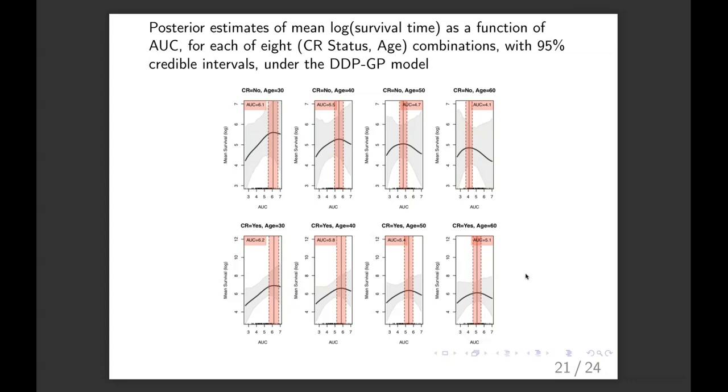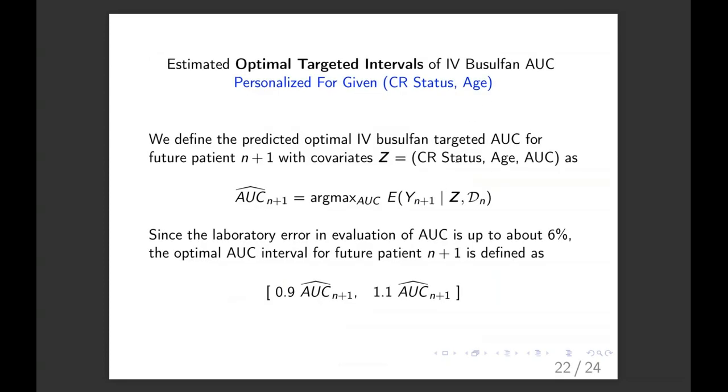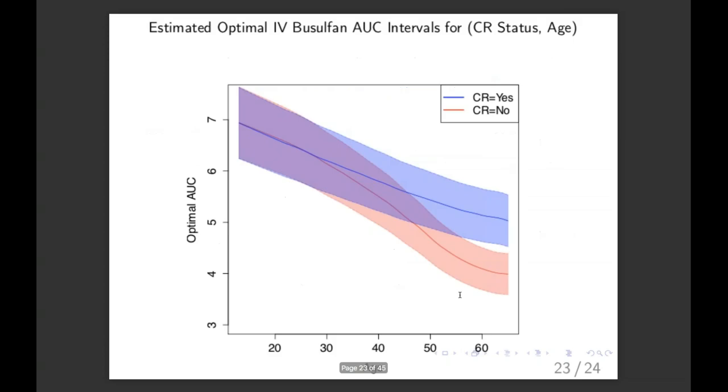So the bottom line on this picture is that it's a graphic that will certainly change therapeutic practice, because depending on the patient's age and whether or not they have active disease, the targeted interval for IV busulfan will differ. So this is a perfect example of personalized medicine implemented using a Bayesian nonparameter model. The optimal AUC is just the max of the one that maximizes mean survival. And then we go within plus or minus 10% of that to get the interval, because that's the variability of the measurements.